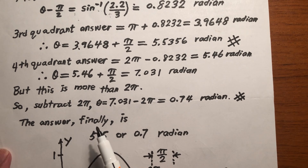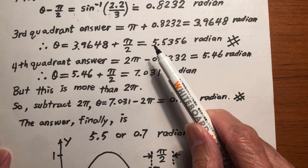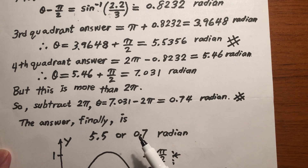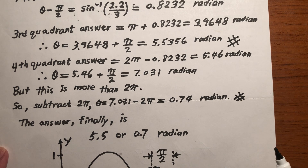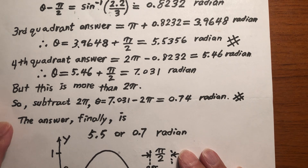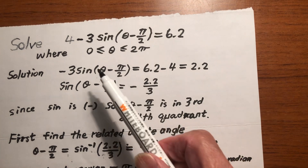So the final answers are theta equals 5.5 radians and theta equals 0.7 radians. These are the two answers.